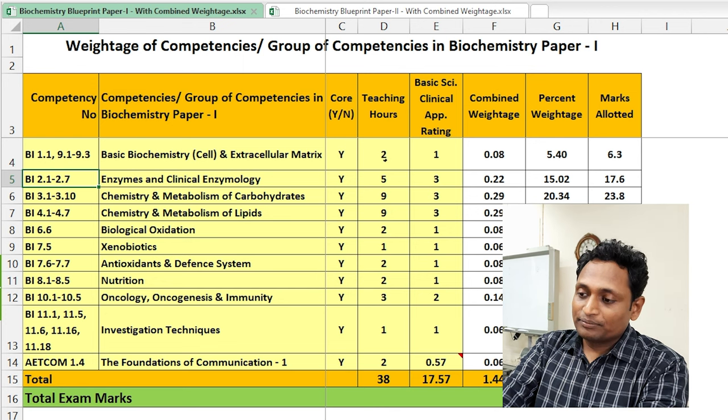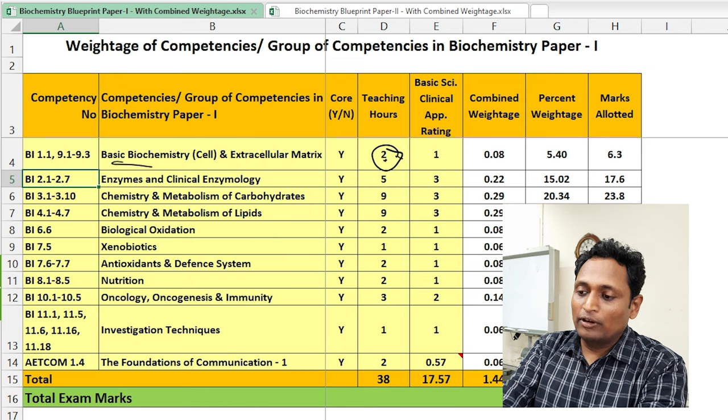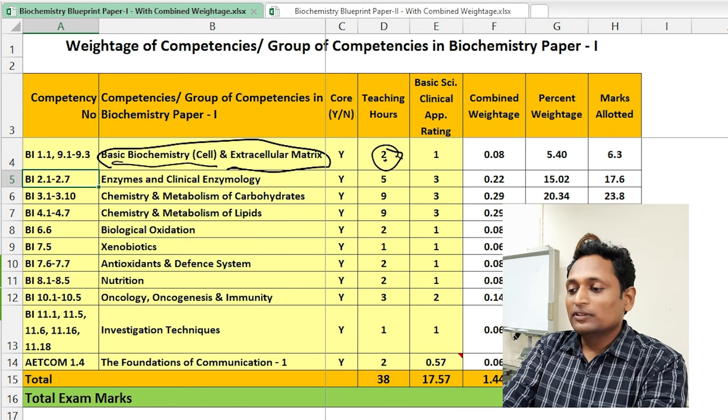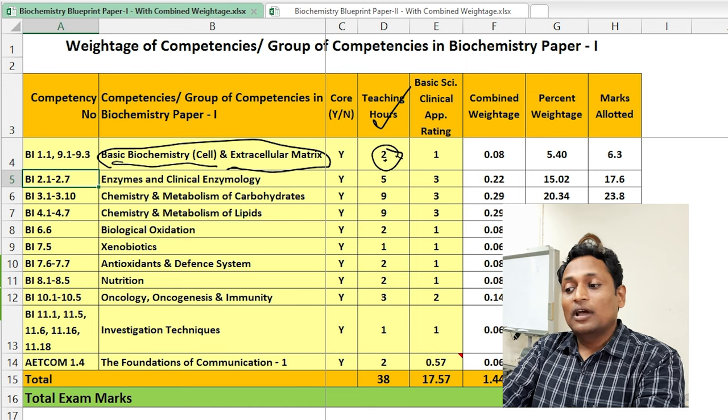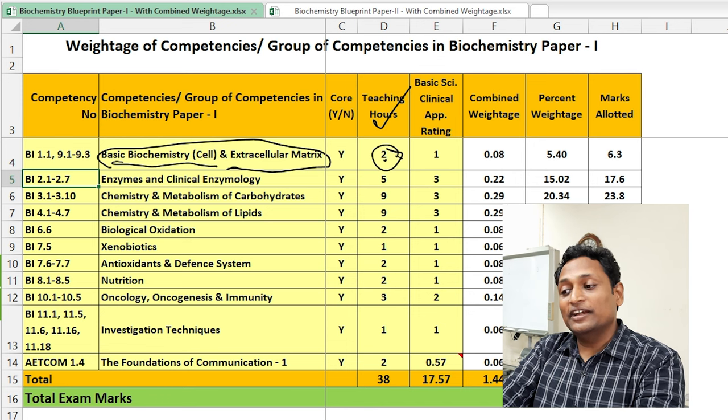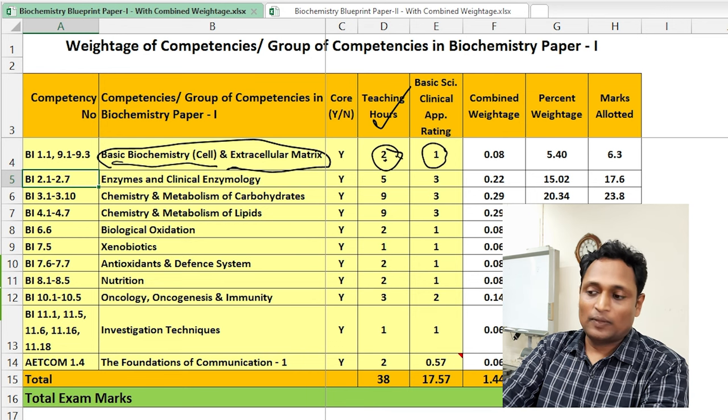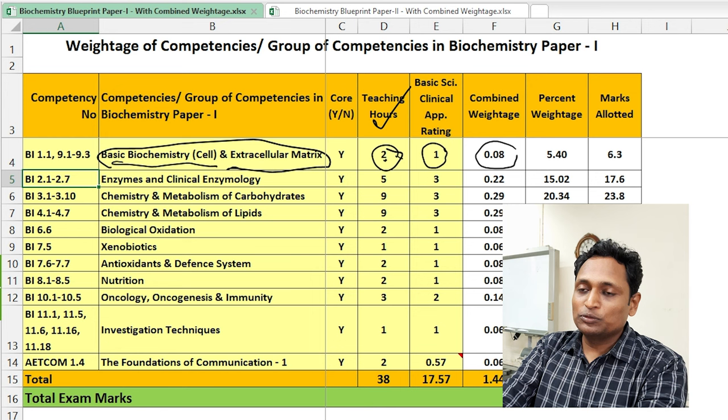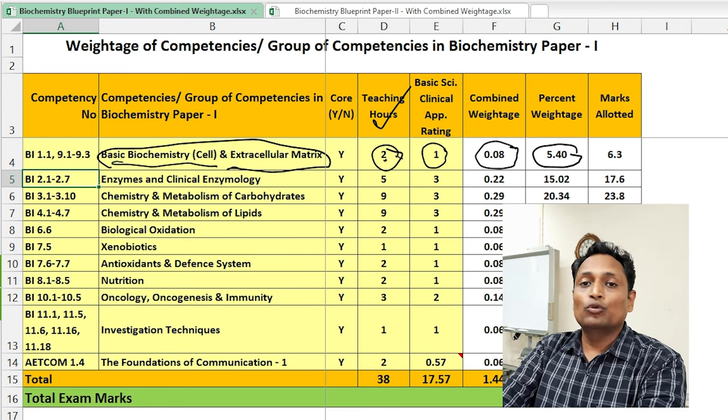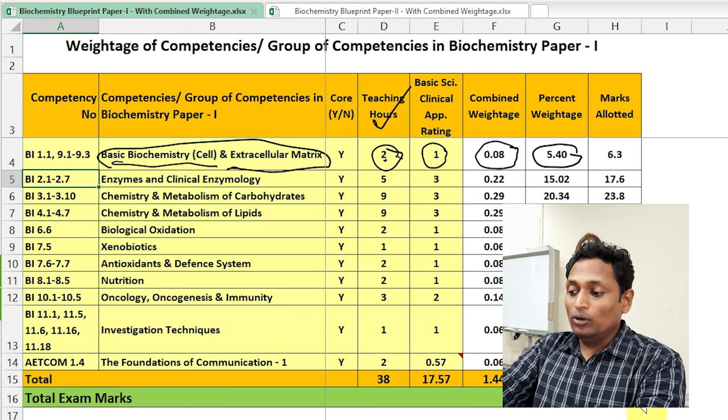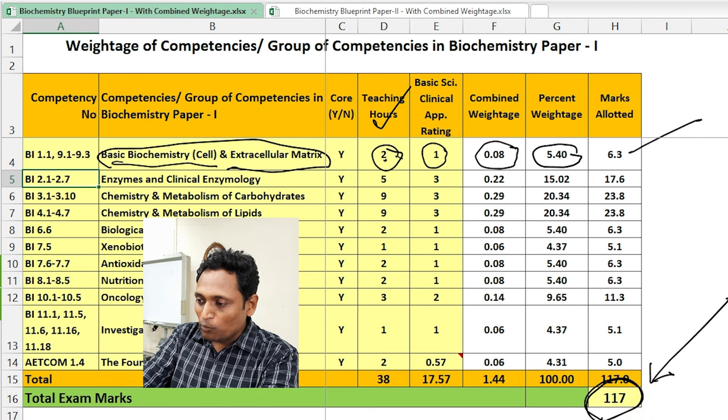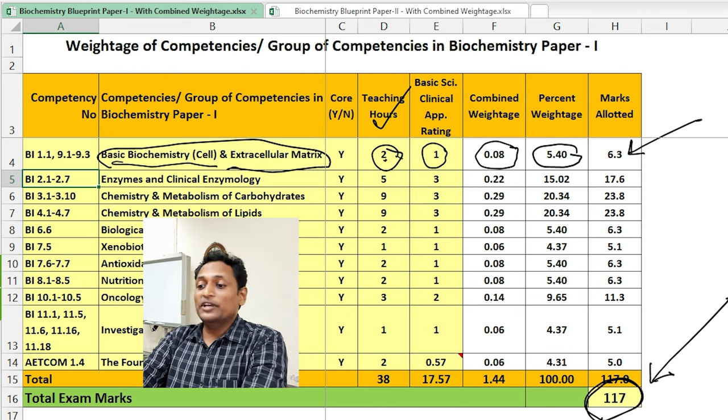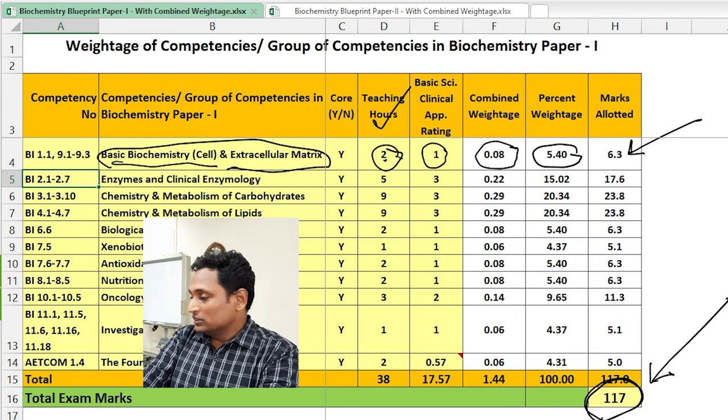Now, see this table, this column where we have to write the teaching hours. Suppose for this basic biochemistry cell and extracellular matrix group of competency there are two teaching hours, one for cell and one for extracellular matrix. So total two teaching hours has been depicted here and the basic sciences clinical application rating we have chosen it for the complete group of competency as one. So two and one this gives you the combined weightage of 0.08 and the percentage weightage being 5.40 will be the total percentage. As we are setting this question paper for 117 marks, the marks allocation for this group of competency comes out to be 6.3, so 6.3 marks will be based on that cell and ECM.